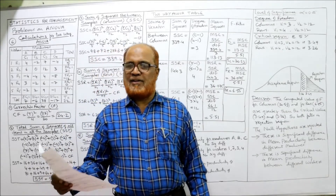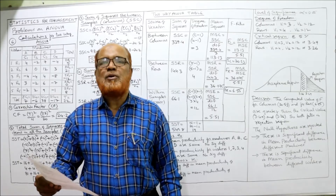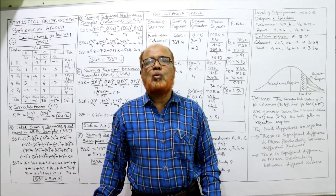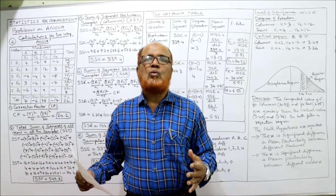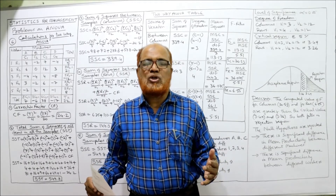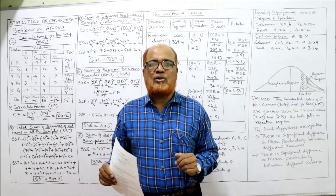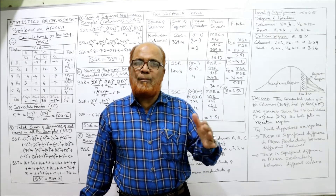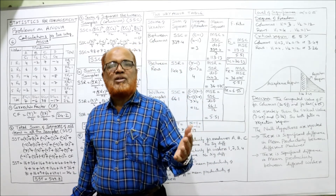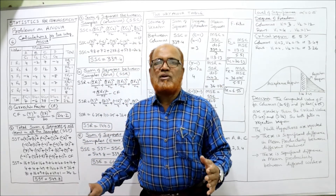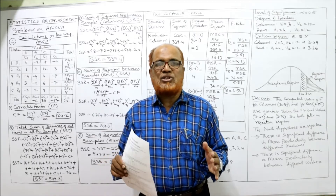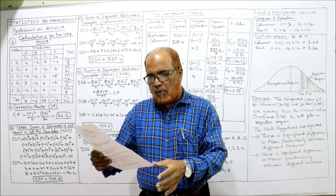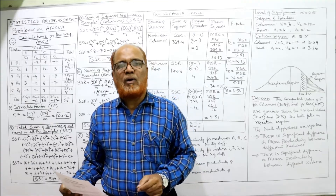Hello viewers, welcome to my channel. I'm Hashem Ali Khan. We have completed so many problems on one-way ANOVA, and in the last video I did one problem on two-way ANOVA — how to make the calculations for the two-way ANOVA table and how to give the interpretation. If you have joined now you may not be able to understand, so watch the video from the beginning. Go to the playlist, select Statistics for Management, watch the theory video on analysis of variance, then the one-way ANOVA problems. Last video I completed problem number five on two-way ANOVA, and now I'm going to start the sixth problem.